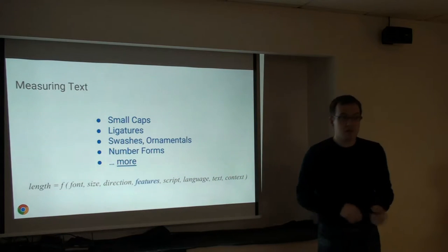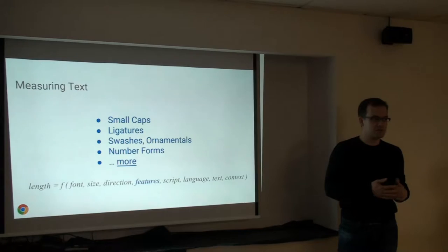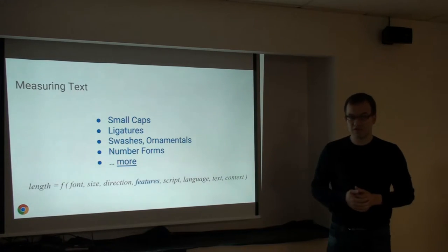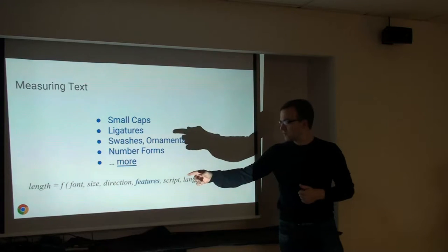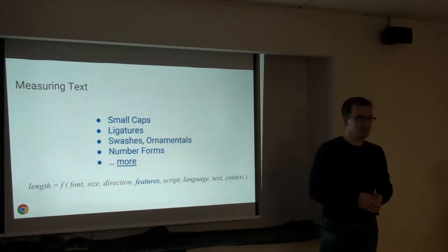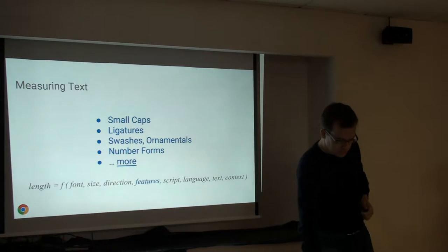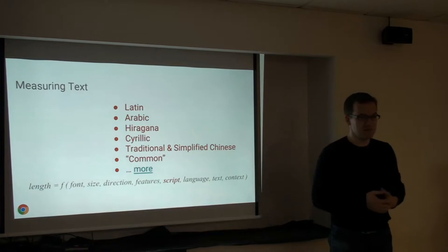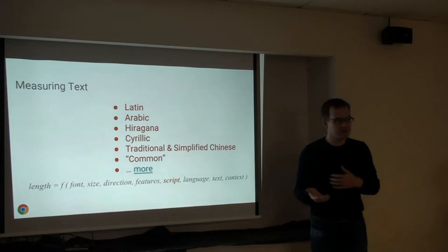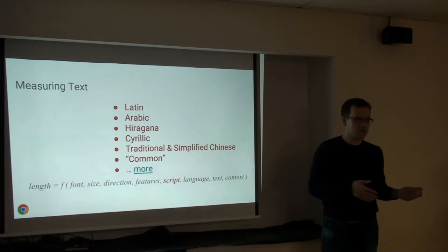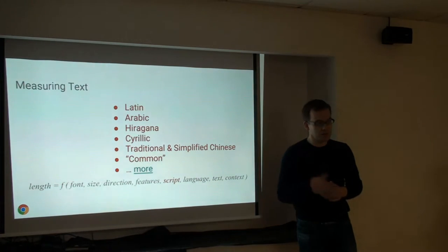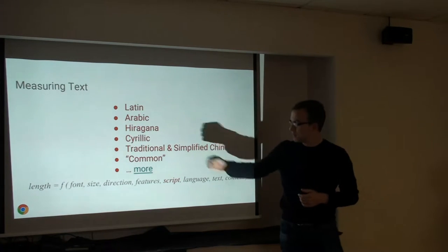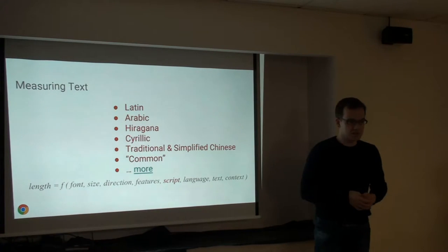OpenType — the widely accepted standard for font files — has features that can be activated or deactivated in CSS. Features include small caps, ligatures, swashes, ornamentals, and variations. Then there's script: the writing system a language is written in. Several languages can share a writing system, and conversely one language can sometimes be expressed in multiple scripts. Examples include Latin, Arabic, Hiragana, Cyrillic, and Traditional and Simplified Chinese.